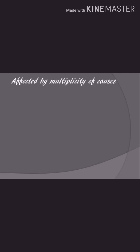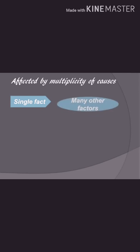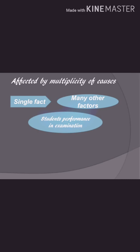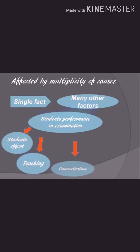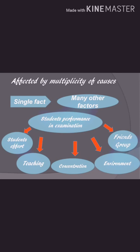Statistics is affected to a marked extent by multiplicity of causes. In statistics, we cannot consider a single factor while neglecting others. For example, a student's performance in an examination may depend on student effort, teaching quality, student concentration, environment, friend group, and so on — it is not possible to neglect any one of these factors.